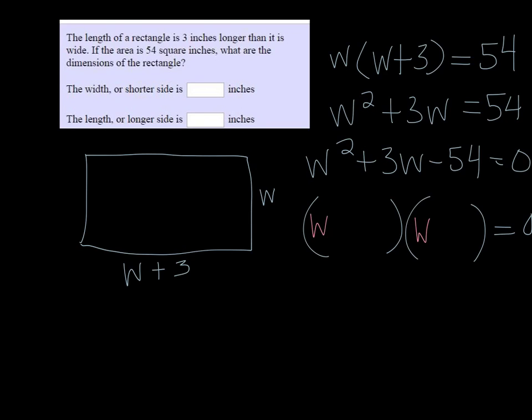So I know I'm going to have a w here and a w here. And 9 times 6 is 54. And if I subtracted 6 from 9, I get 3. So I want to have a plus 9 and a minus 6 so that I get 9w and minus 6w, which gives me the 3w.